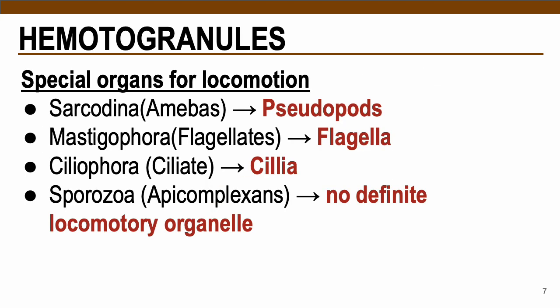In terms of the hematoorganelles or special organs for locomotion, amoebas use pseudopods as their motility organelle. Flagellates use flagella, ciliates use cilia, and for the apicomplexans, there is no definite locomotory organ.